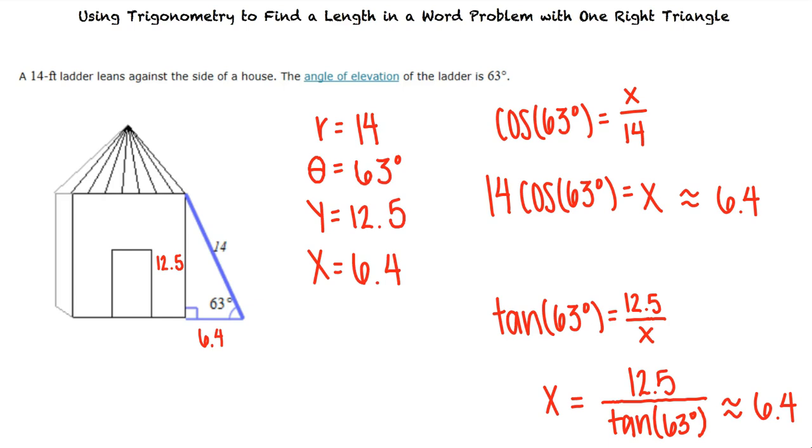Okay. So to find a length in a word problem with one right triangle, I can use the information given to determine which trigonometric equation I should use. I can then substitute the known values into my equation and solve for the length. That's exactly right. Great work.